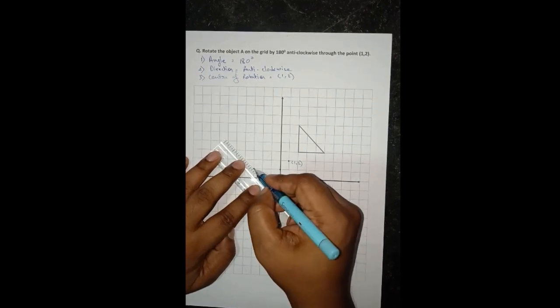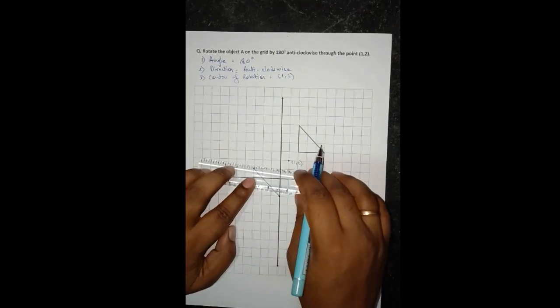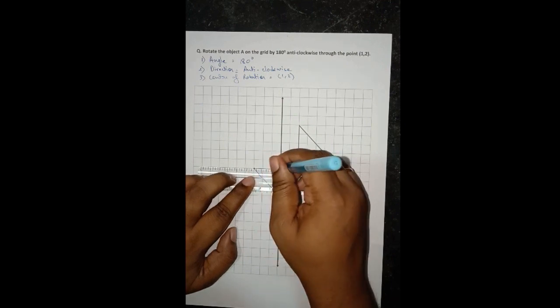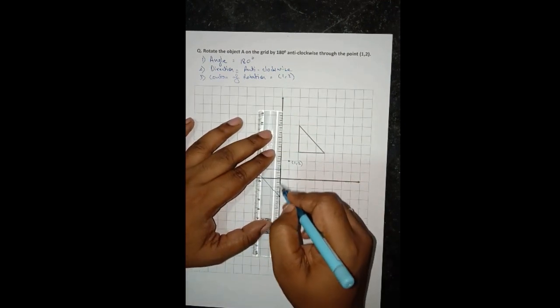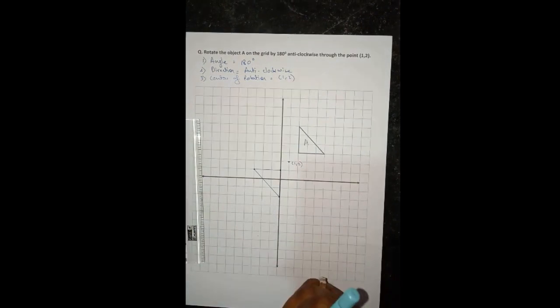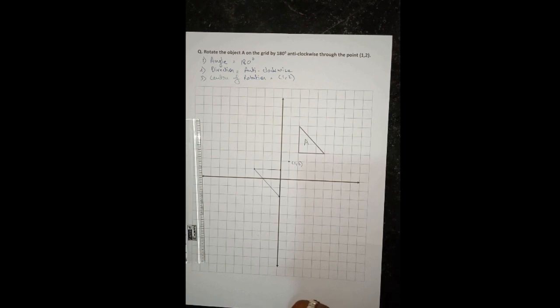Now we'll join the points. So students I hope you have understood how to rotate the object using the tracing paper. Now there is one more method in which the tracing paper is not required. That will be useful if you don't have the tracing paper or you are not provided with tracing paper by the school. So that method is also very important, I'll show you that method in the next part of this video. Thank you.